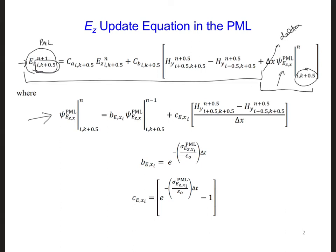That's the second equation on this slide. Here we can see that b and c, these coefficients, only depend on sigma. So here's the expressions for b and c. And they only depend on sigma at the EZ locations within the PML.